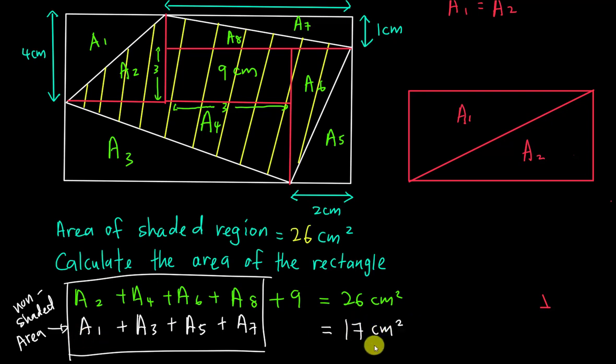If the non-shaded area is 17 and the shaded area is 26, then I know the area of the rectangle equals the shaded area plus the non-shaded area, which is 26 plus 17, which equals 43 centimeters squared.